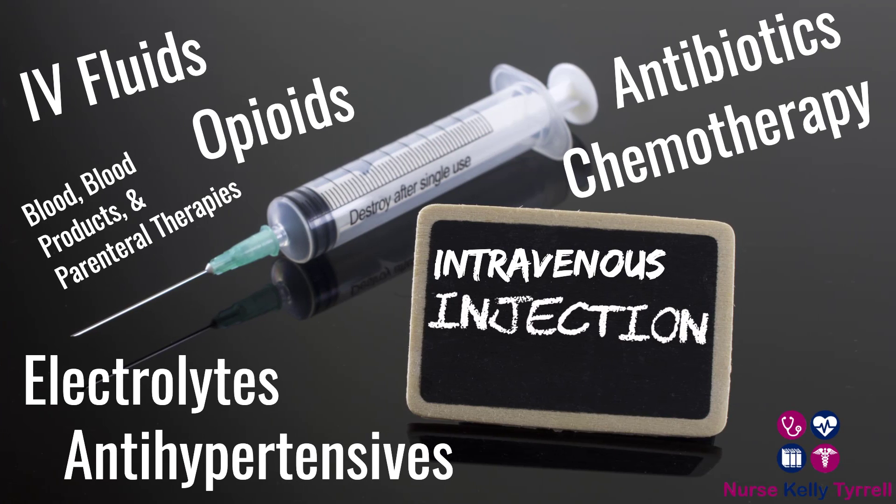Next is the IV route. When working in a hospital setting, this is probably going to be the most common route of administration alongside oral medications, because medications given IV work much faster — they are absorbed directly into the bloodstream. Common IV medications include opioid pain medications like Dilaudid, Fentanyl, and Morphine; IV fluids such as normal saline solution, lactated Ringer's solution, and D5W; and antibiotics such as vancomycin, rocephin, and gentamicin.